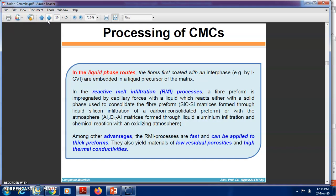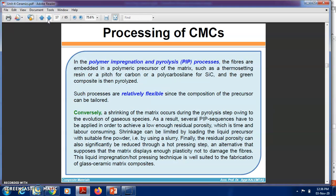Among the advantages, the reactive melt infiltration processes are fast and can be applied to thick preforms. They also yield materials of low residual porosity and high thermal conductivity. In the polymer impregnation and pyrolysis process, the fibers are embedded in a polymeric precursor of the matrix, such as thermosetting resin or pitch for carbon, or polycarbosilane for silicon carbide. The green composite is then pyrolyzed.